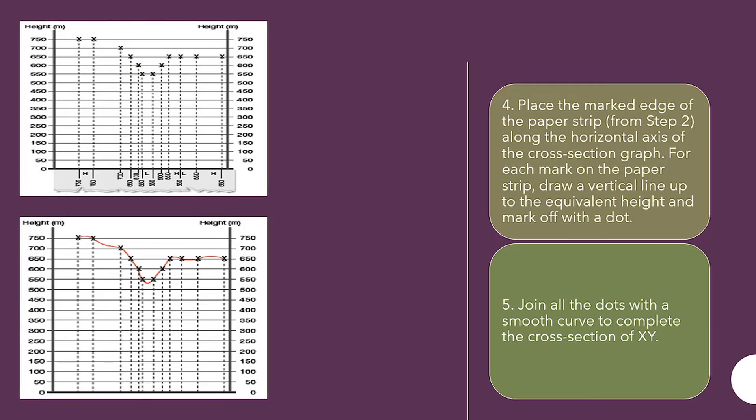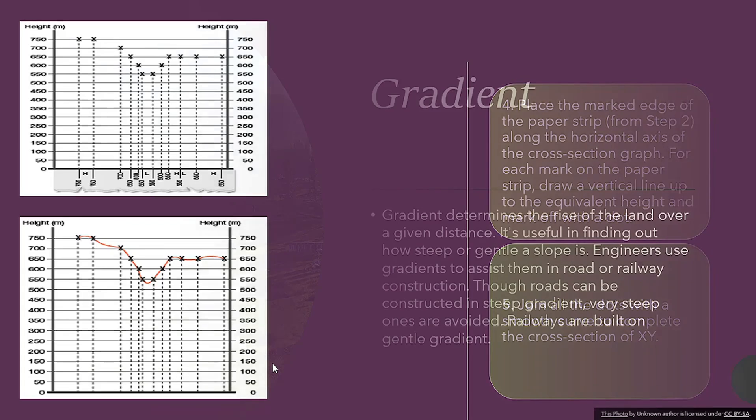Step 4. Place the marked edge of the paper strip from step 2 along the horizontal axis of the cross-section graph. For each mark on the paper strip, draw a vertical line up to the equivalent height and mark off with a dot. So, it's basically just plotting points. Step 5. Join all the dots with a smooth curve to complete the cross-section. As you can see, that's the curved line that you would draw to complete the cross-section. And the line that's going up is where you would have taken your strip of paper and just mark off those points and draw a line upwards to be as accurate as possible.